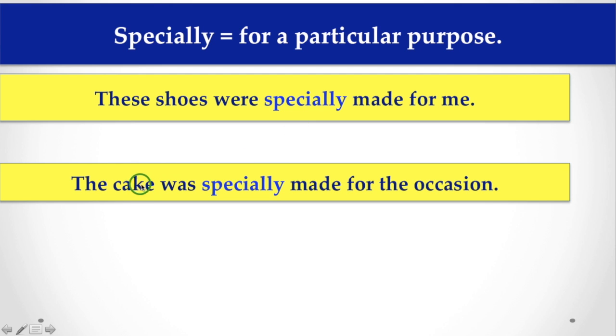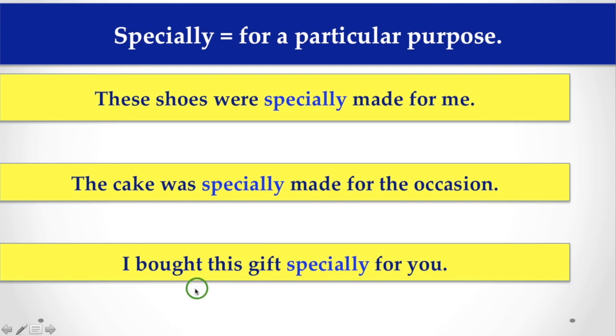Again, the cake was specially made for the occasion. That means someone made this cake or the cake was made for that occasion. Here specially refers to a particular purpose. Or you can say that I bought this gift specially for you. Here also I am talking about a purpose.